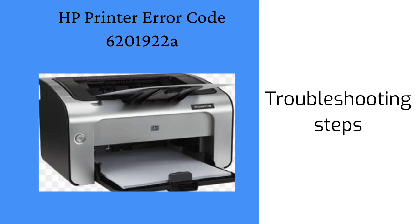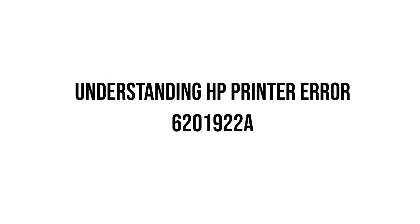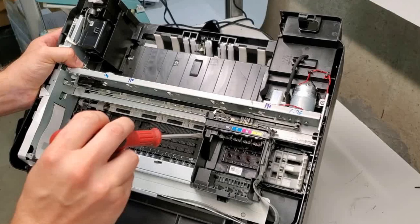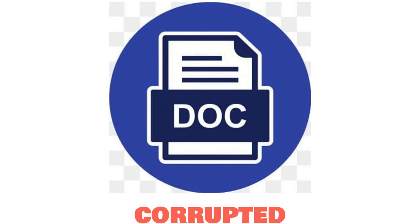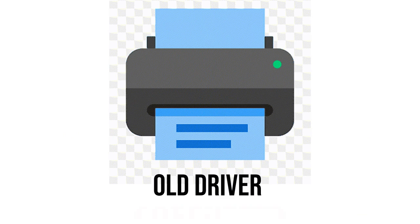Hello, today we are going to show you how to resolve HP Printer Error Code 6201922A. First, we are going to understand HP Printer Error Code 6201922A. This error normally demonstrates fundamental issues inside the printer's equipment or programming parts, for example, availability issues, tainted documents, or obsolete drivers.